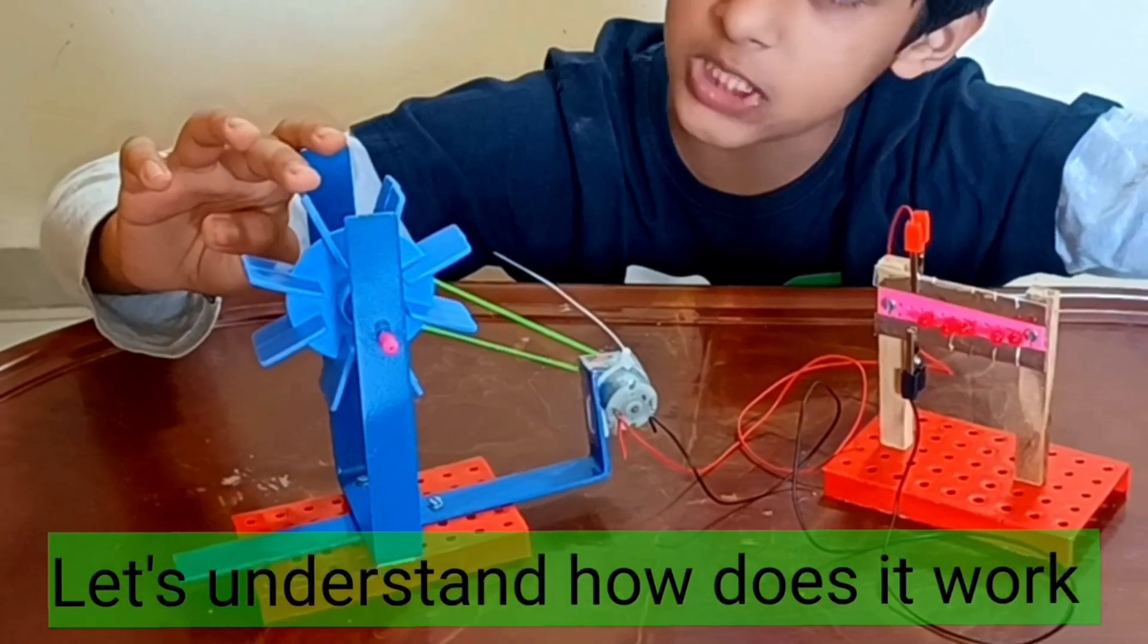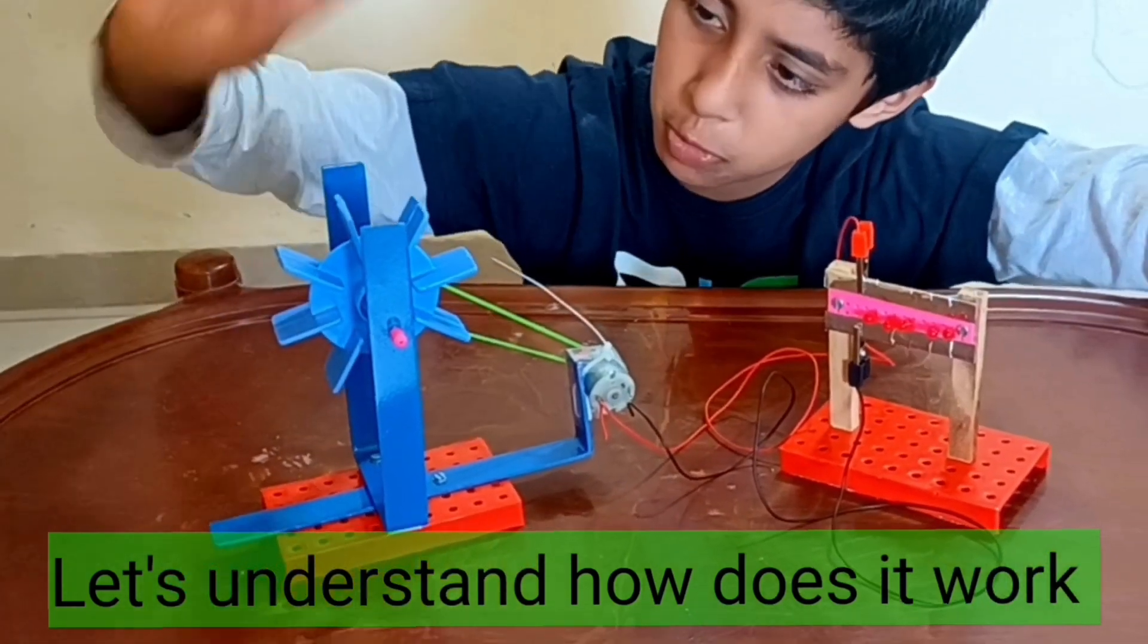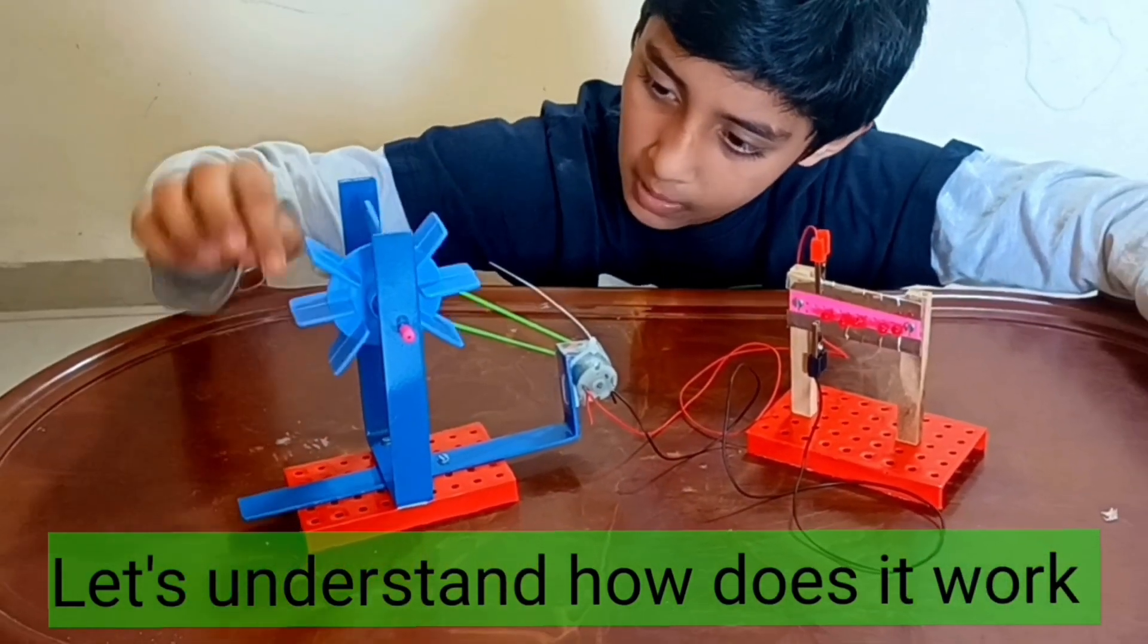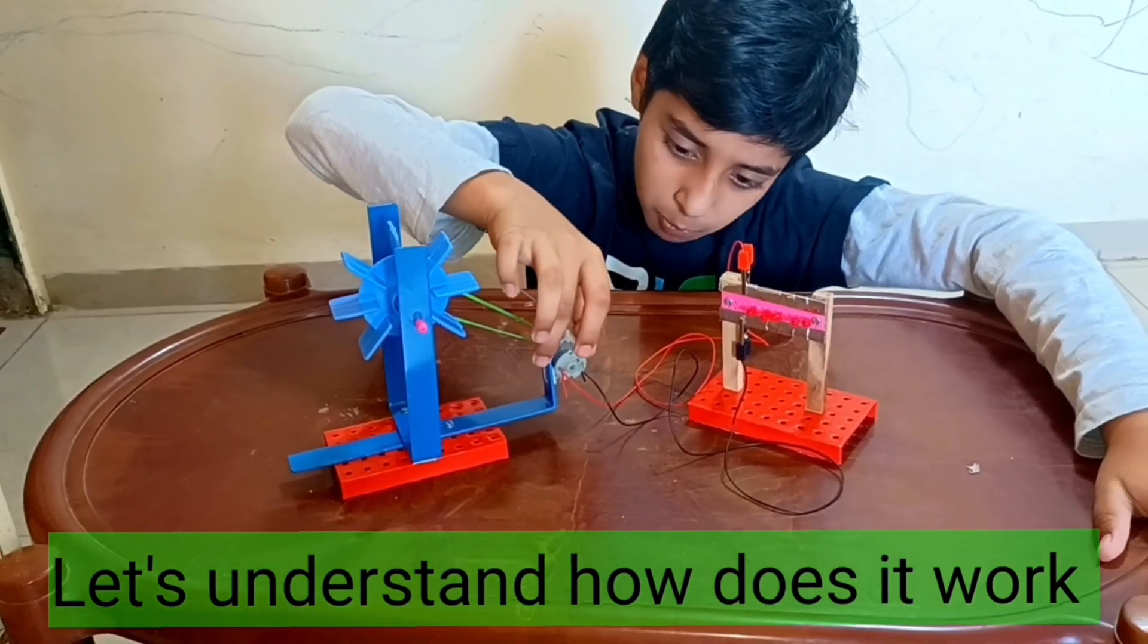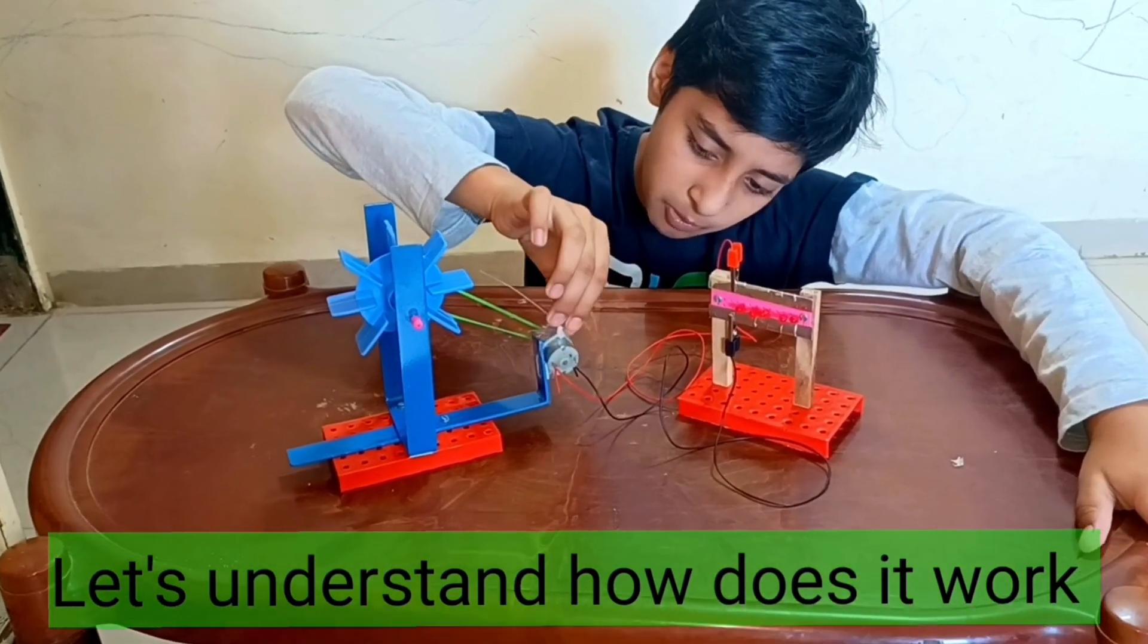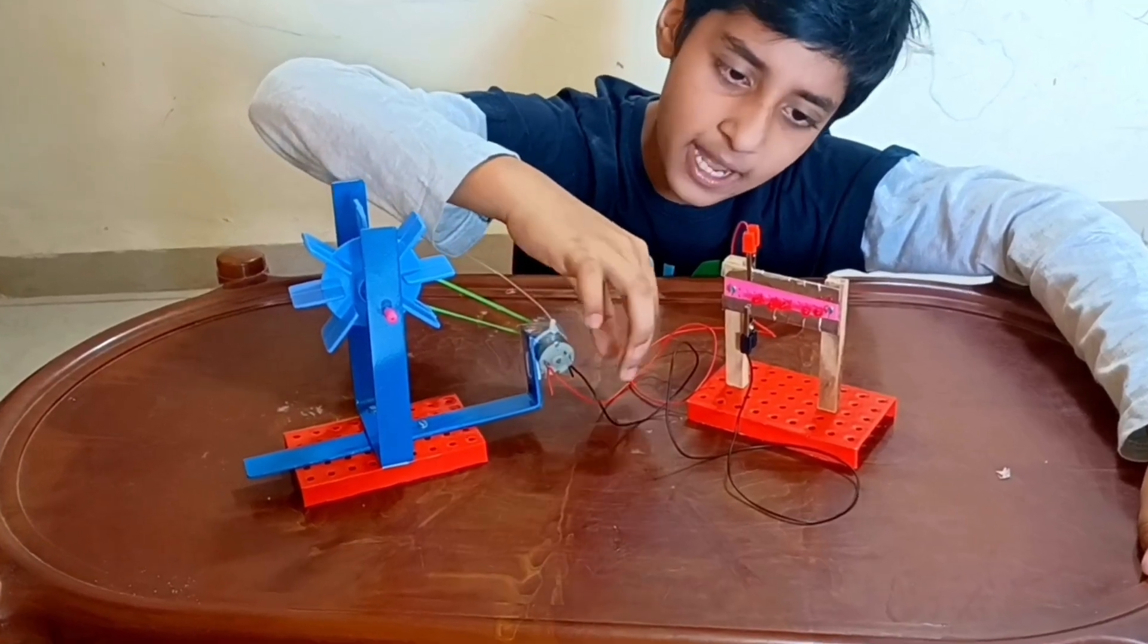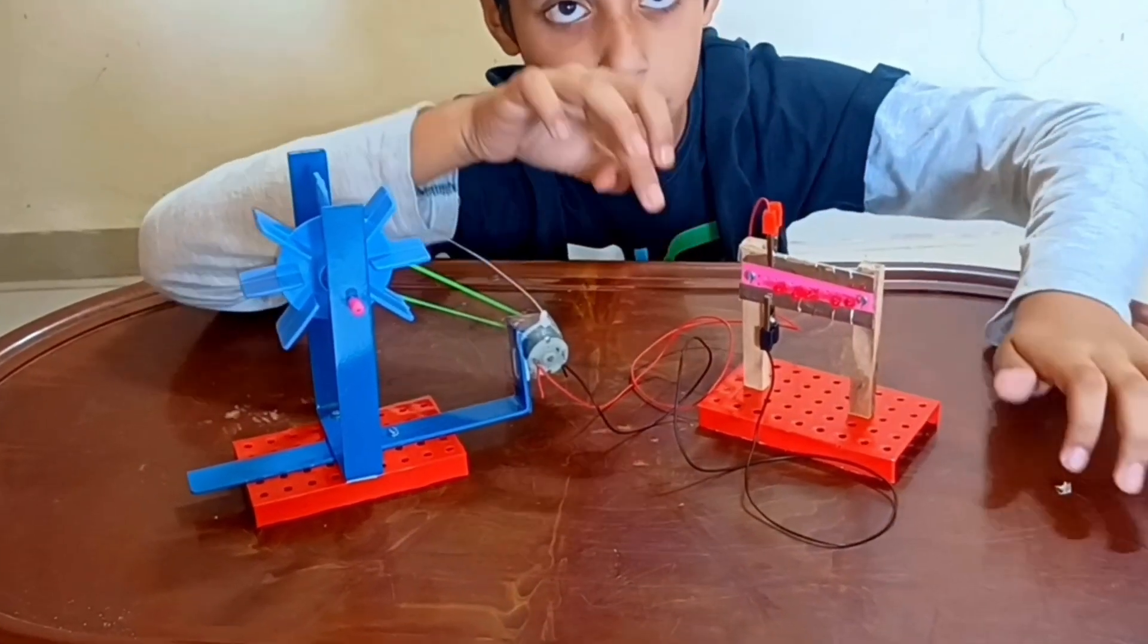This is one turbine. If we put water, this one will move. After moving, this elastic will move and this motor will move. If this motor moves, it will produce electricity and this light will blink.